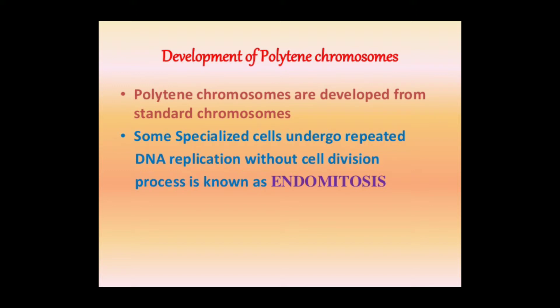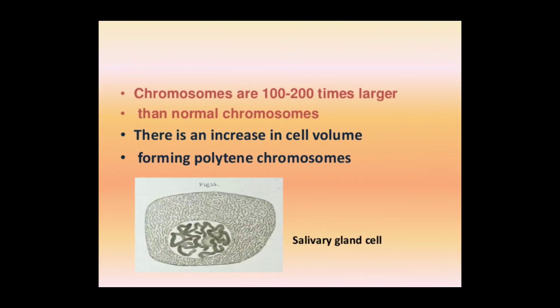Some specialized cells undergo repeated replication without cell division — meaning DNA replication happens but the cell does not divide. This process is called endomitosis. As a result, chromosomes become 100 to 200 times larger than normal chromosomes.